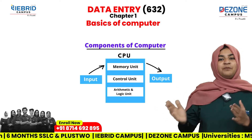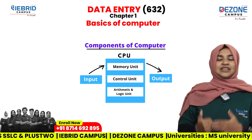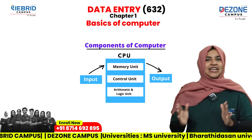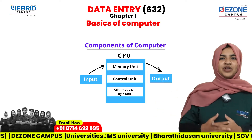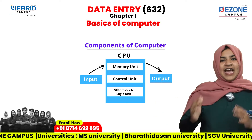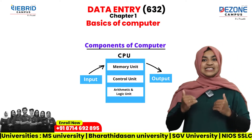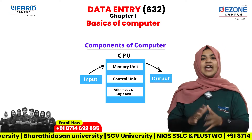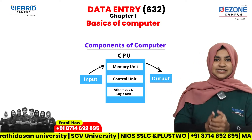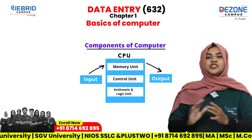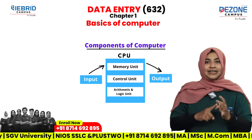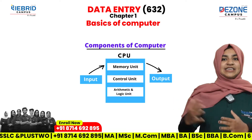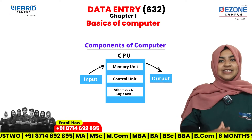The input unit is what elements we use to give input to the computer. The output unit is what gives us results. What is ALU — Arithmetic and Logic Unit? In our computer, we can perform mathematical calculations: addition, division, percentage, and multiplication. This is called mathematical calculations, and this unit is called ALU, the Arithmetic and Logic Unit.